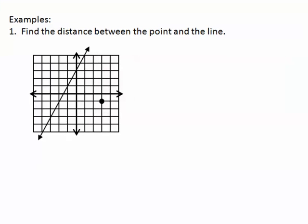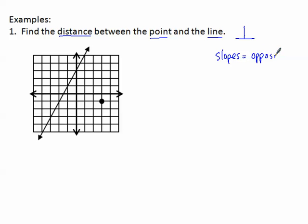Now let's take a look at some examples. Number one: find the distance between the point and the line. Remember, the distance between a point and a line means we want to think perpendicular. So in a coordinate plane, I have to remember about slopes of perpendicular lines — the slopes are opposite reciprocals. Opposite reciprocal slopes make perpendicular lines. So first I need to calculate the slope of the line that's given.